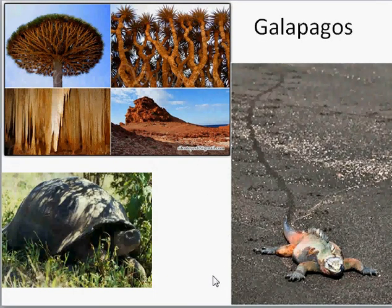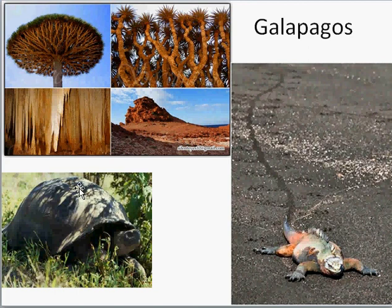The Galapagos has been isolated since it appeared above the ocean, with no contact with continents until people arrived and started bringing plants and animals to the island. The native species have had a long time to diversify — practically every native species on the Galapagos is endemic. So there are many weird and wonderful plants and animals, including the famous giant tortoises, which are about a meter long and three-quarters of a meter across.